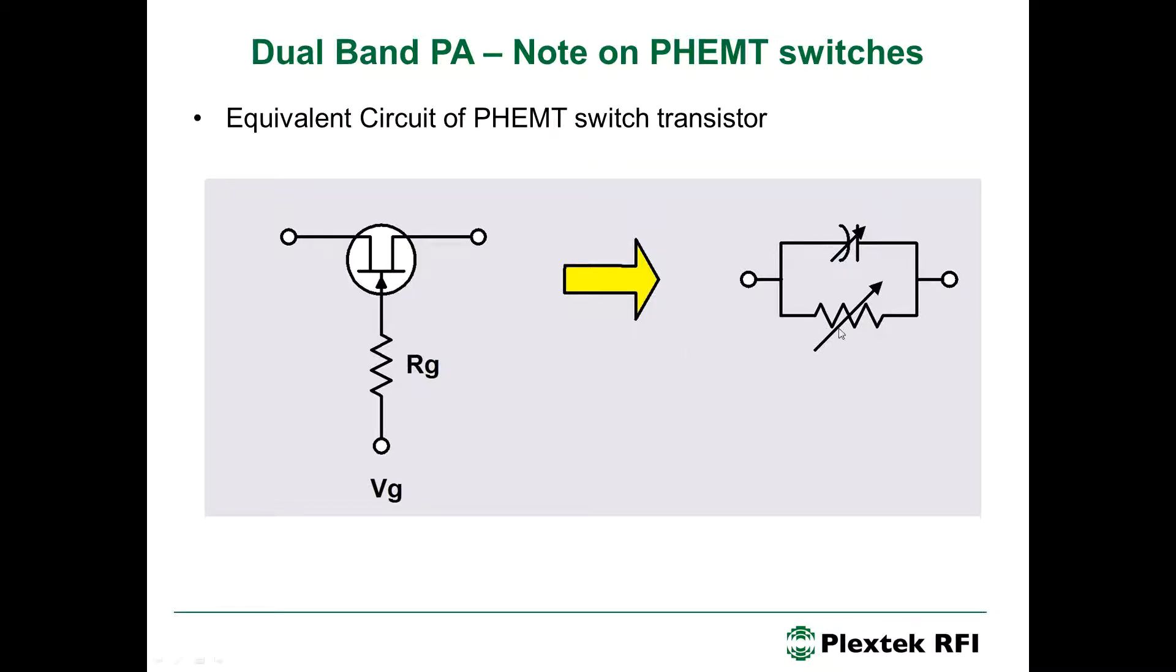Over here is just a simple equivalent circuit of the PHEMP transistor as a switch. So, when it's on, it looks rather like a small-value series resistor. And the process that we are considering, a half micron device will have around about three ohms on resistance. When it's reverse biased, pinched off, it looks rather like a series capacitor. And, for this process, a half millimetre device will have an off-capacitance of around about 120-130 femtofarads.